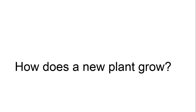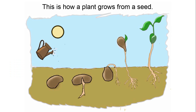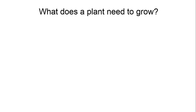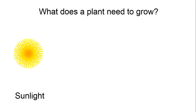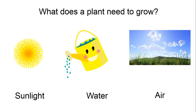How does a new plant grow? Many plants grow from seeds. This is how a plant grows from a seed. When a plant gets sunlight, water, and air, it grows. So what does a plant need to grow? Sunlight, water, and air.